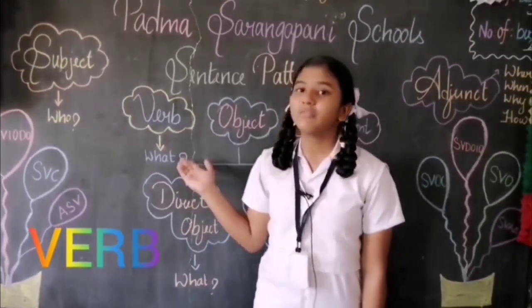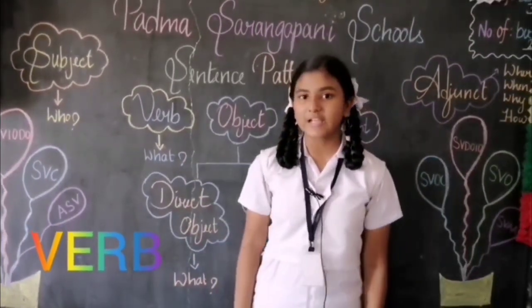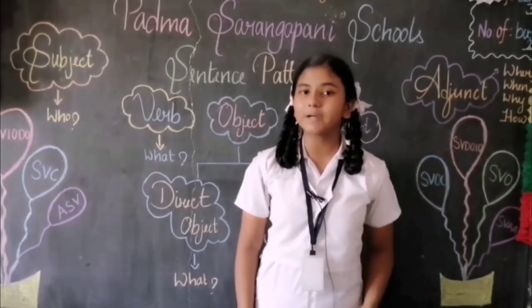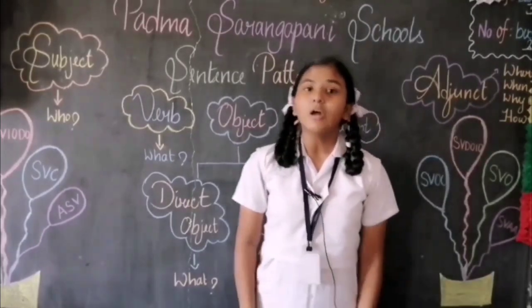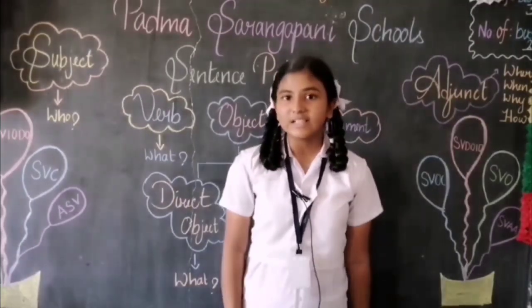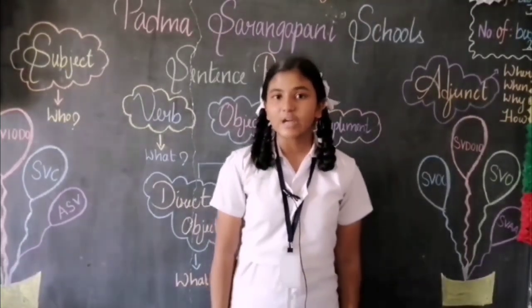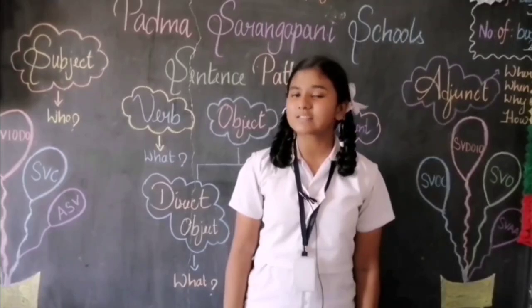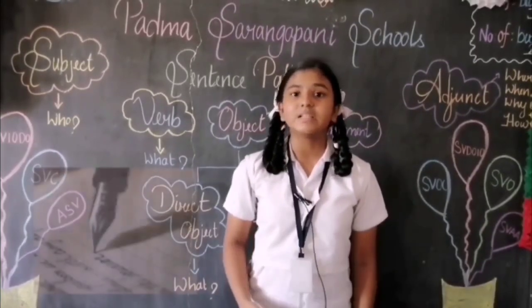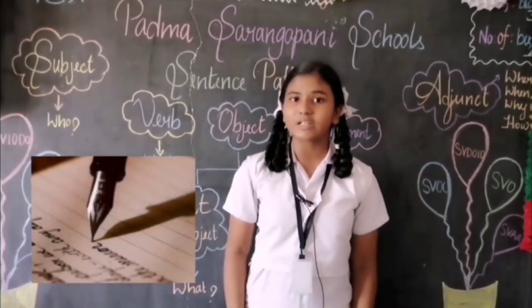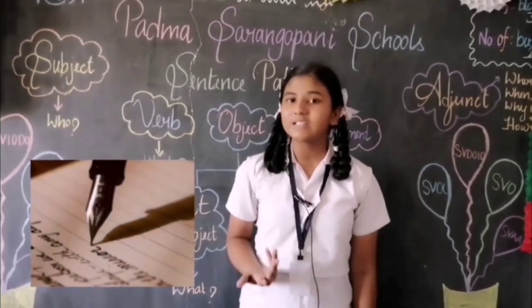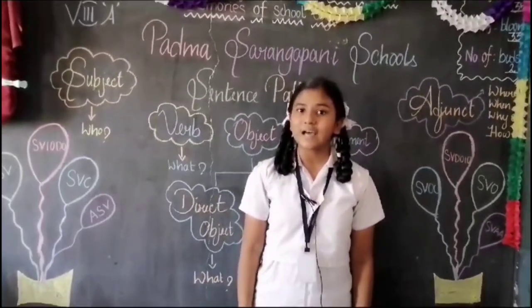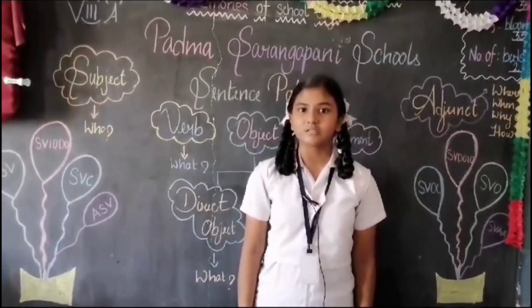Verb: a verb shows an action or activity done by the subject. It also tells the status. To get the verb, ask what does the subject do. Example: James wrote a letter. What did James do? Here, 'wrote' answers the question.